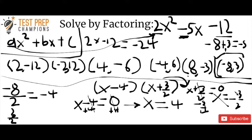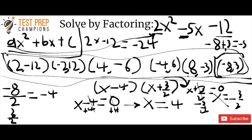This might seem like a lot of steps, but factoring does have many steps. To save time, focus on listing pairs of numbers that multiply to negative 24, then check which pair adds up to your b term, which was negative 5. Right off the bat, you could come up with negative 8 and 3 — multiplies to negative 24, adds to negative 5 — without writing everything out.